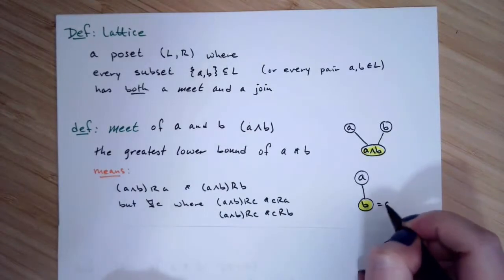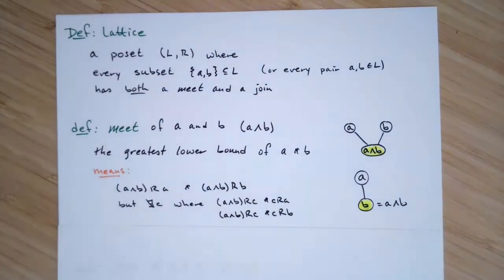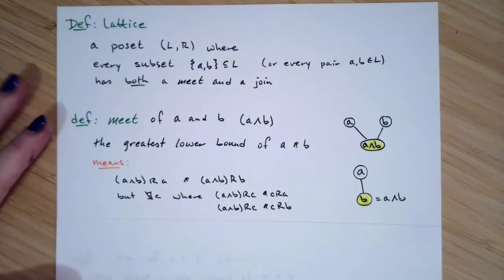So this is a situation where A meet B is, in fact, one of your two elements. And that happens anytime you have this situation that looks like a chain.